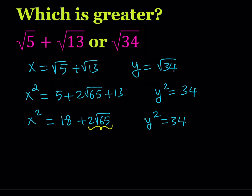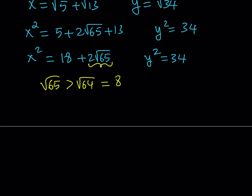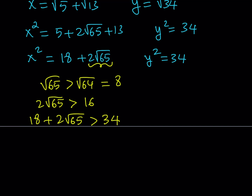65 is close to 64, so I can compare it to 64. The square root of 65 is obviously greater than the square root of 64, which is equal to 8. So multiplying both sides by 2: 2 times the square root of 65 is greater than 2 times 8, which is 16. Then adding 18 to both sides: 18 plus 2 times the square root of 65 is greater than 18 plus 16, which is 34. So now we know that 18 plus 2 times the square root of 65 is greater than 34.